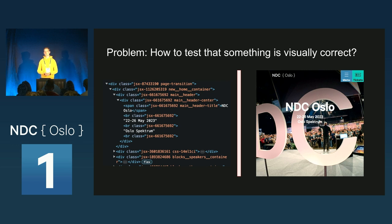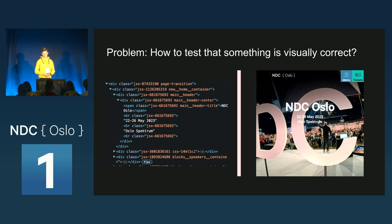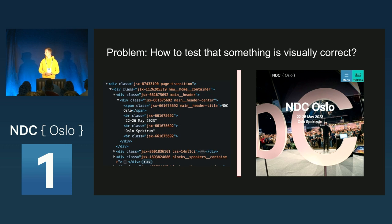Even if you write frontend tests, they are usually time-consuming, pretty boring to write, and they break really easily when you start changing the DOM tree. You could solve this by doing a lot of manual testing, just clicking around, but if you're anything like me, you'd like to automate things — and not only automate things, but maybe do them even better.